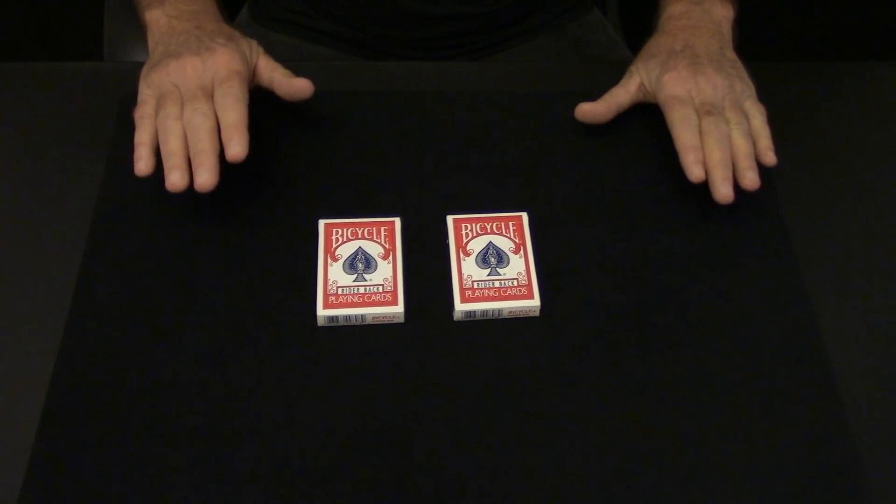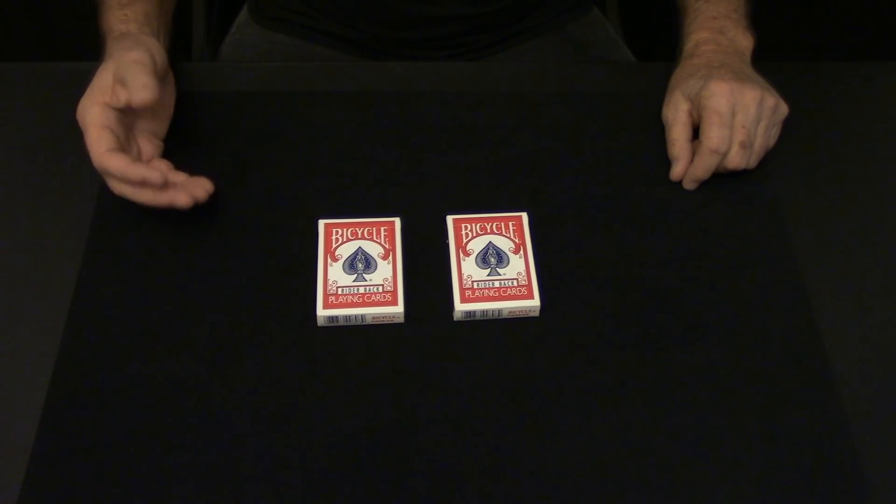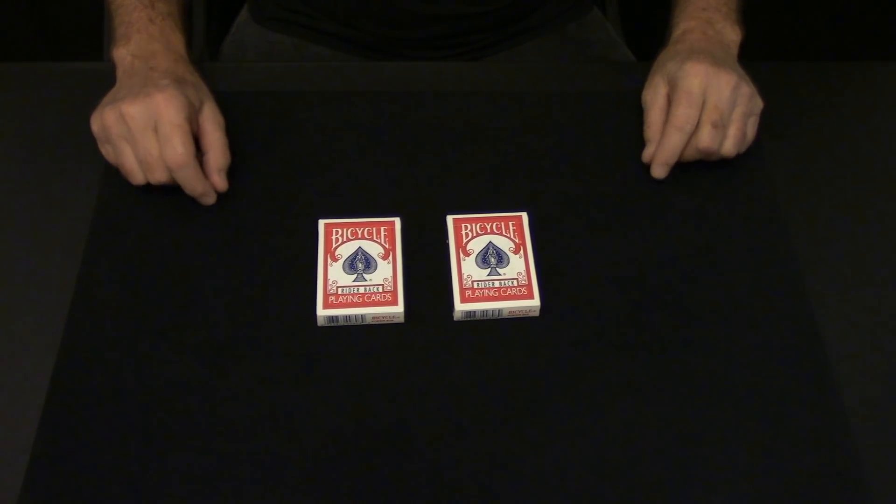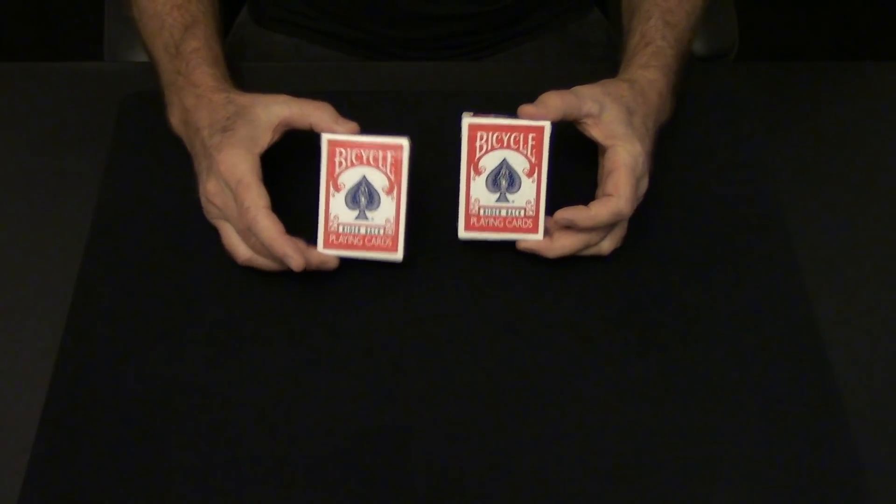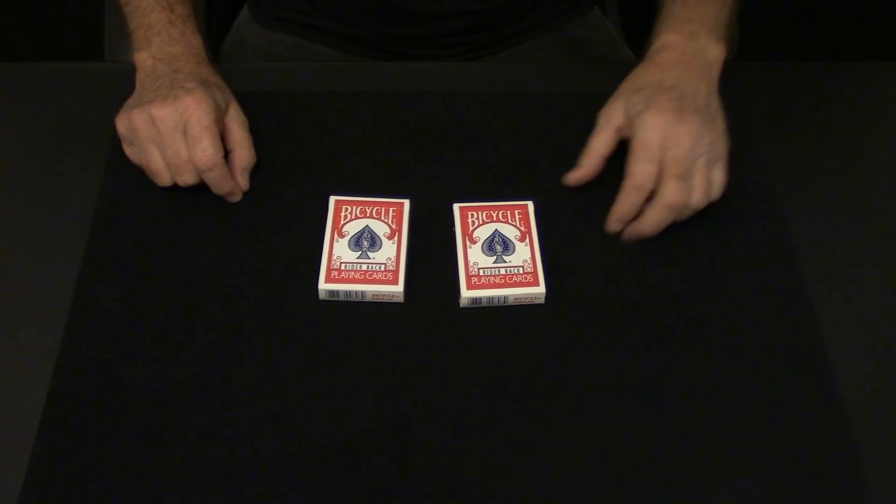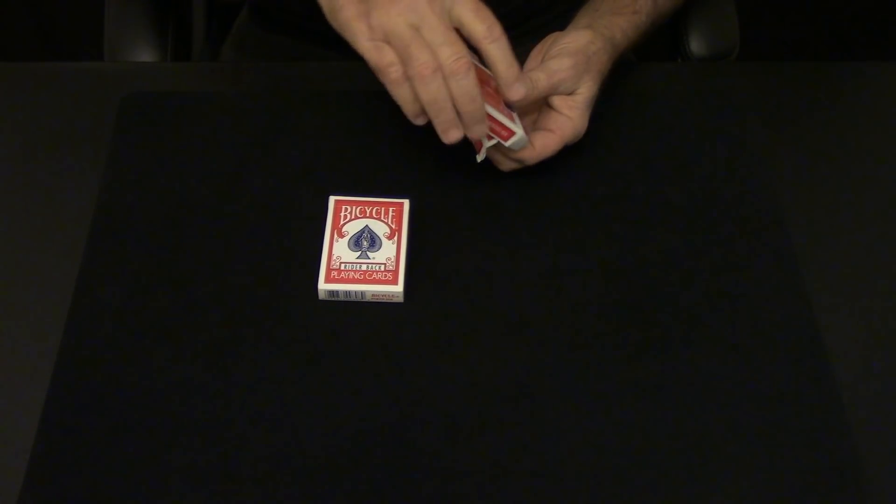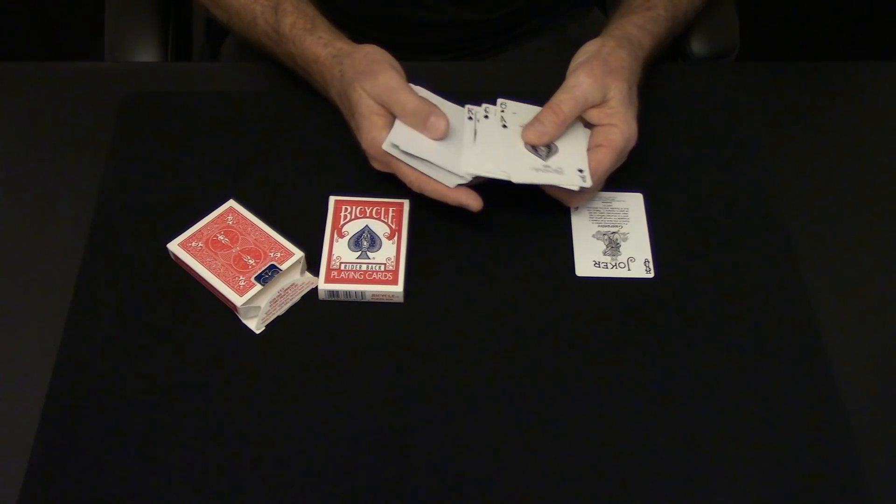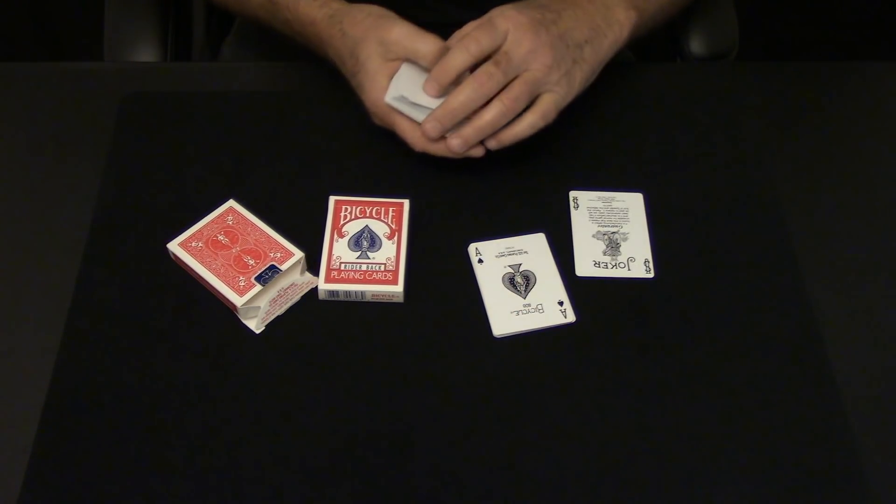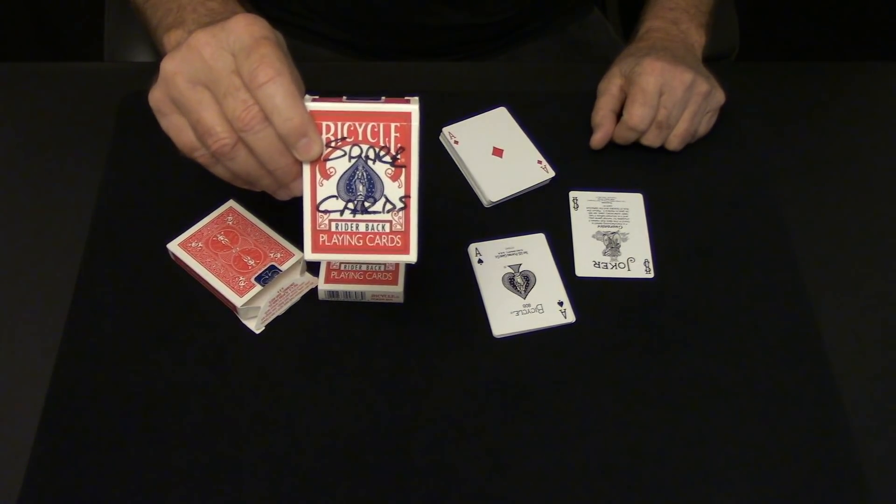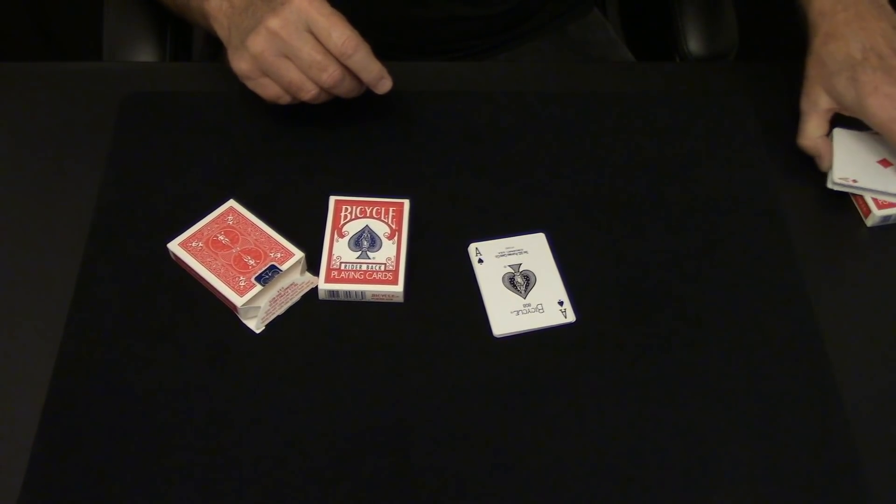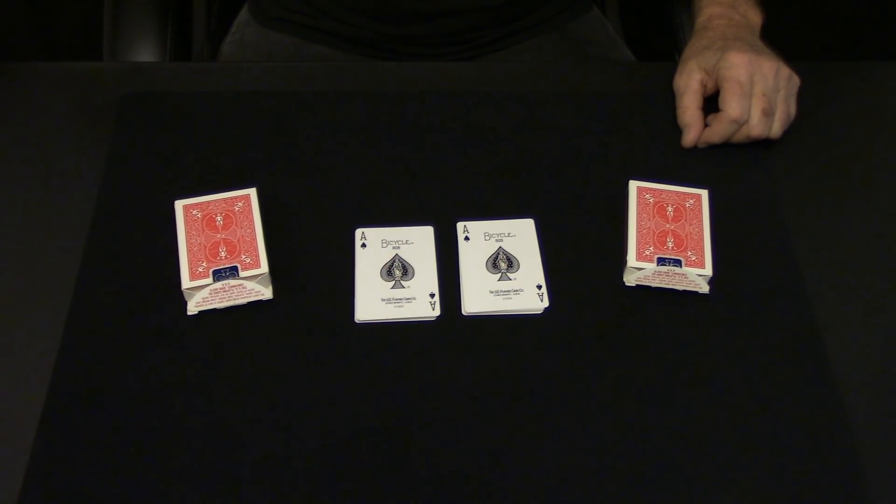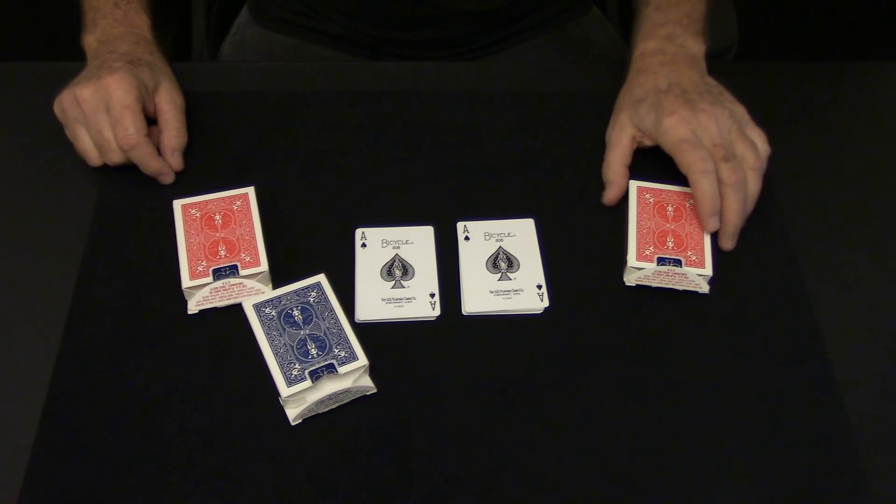Okay, here we go. First of all, there are no difficult sleights to learn. You might be asking, how could that be? Well, there are a couple moves, but nothing that takes hours and hours of practicing in order to perfect. You will need two brand new decks of red backed cards. Don't use old grungy cards. Remove the ace through king of spades from each deck.